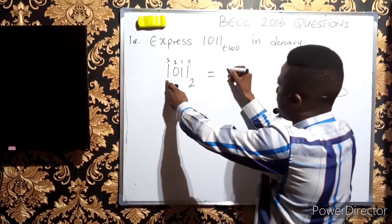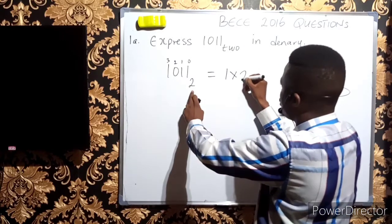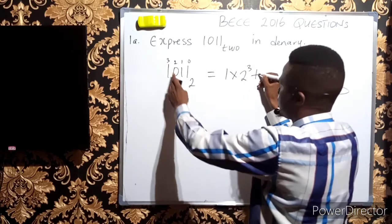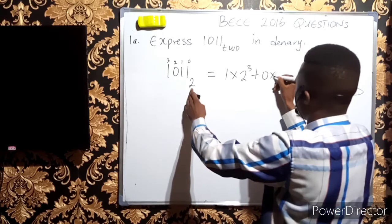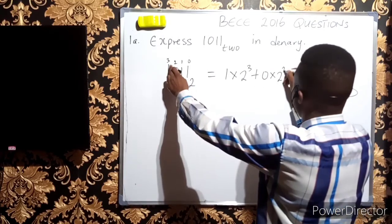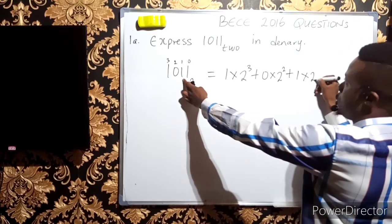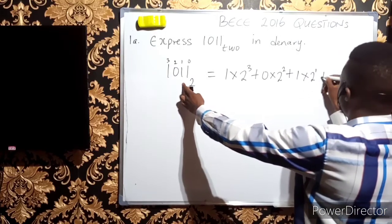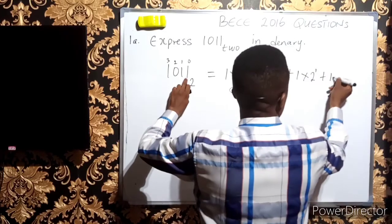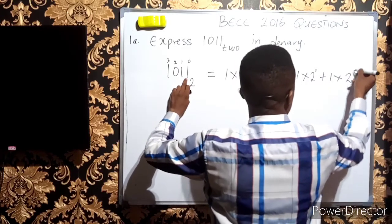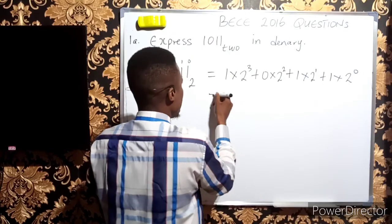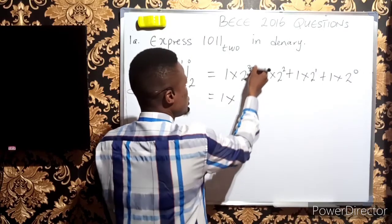This equals 1 × 2³ + 0 × 2² + 1 × 2¹ + 1 × 2⁰. So we have 1 × 2³ is 8 because 2 × 2 × 2 equals 8.